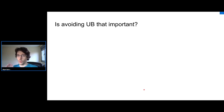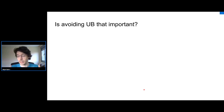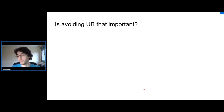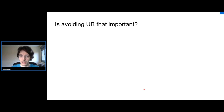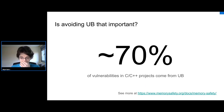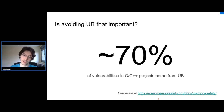Why is avoiding undefined behavior important? C has undefined behavior essentially by design — it was designed as a high-level assembly. The reason it matters is simply that 70% of vulnerabilities in C and C++ projects come from undefined behavior, basically from memory safety issues mostly.